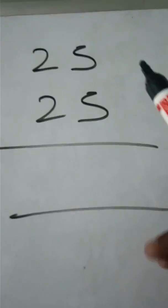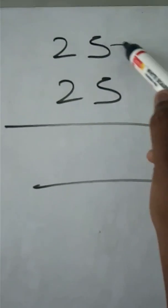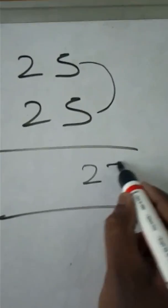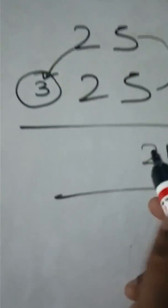I can tell you another example for 25 into 25. What we have to do is multiply 5 into 5 and place it here, 25. Replace 2 with the next number 3, multiply 2 into 3 is 6, then it is 625.